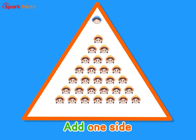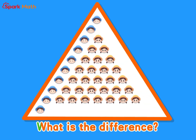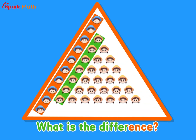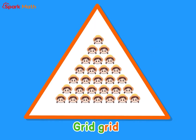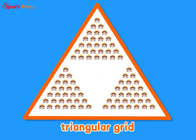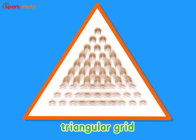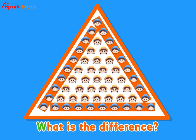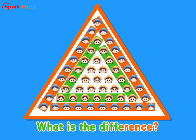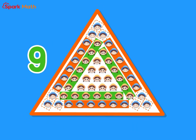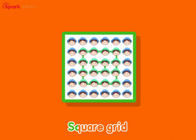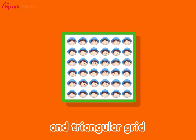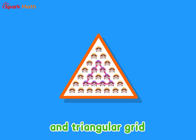For triangular numbers: add one sign — what is the difference? Three. Add one layer — what is the difference? Nine. Square and triangular.